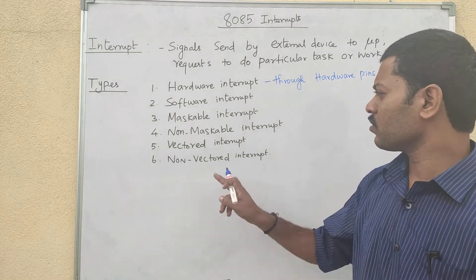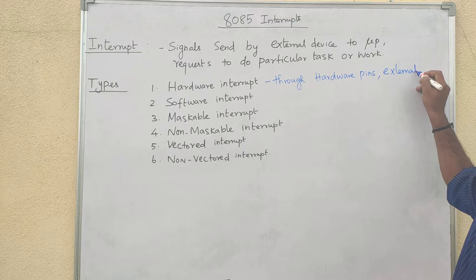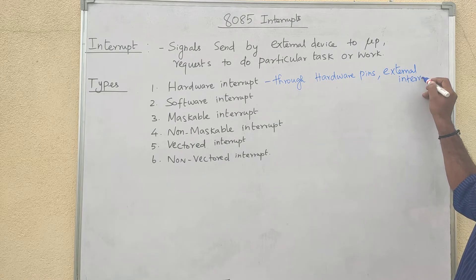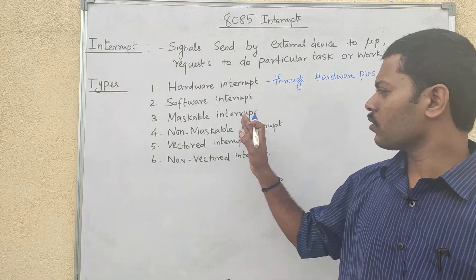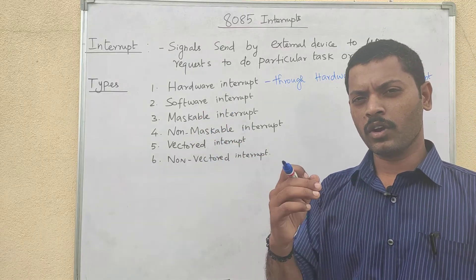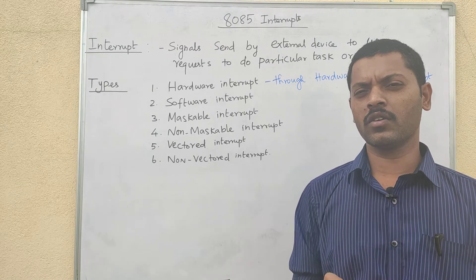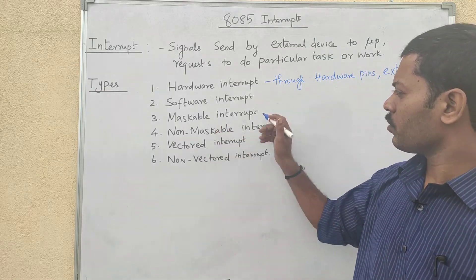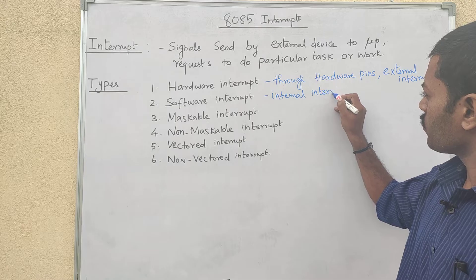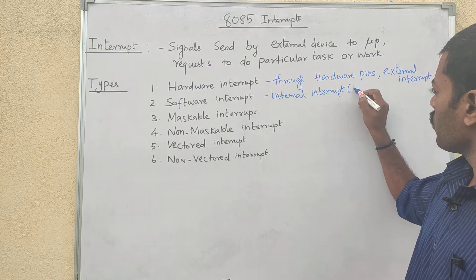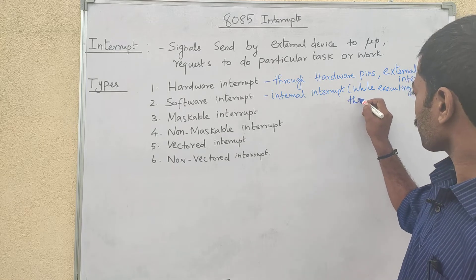Next is the software interrupt. Hardware interrupts are external interrupts — generated by a peripheral or I/O device, which is an external device. Software interrupts are generated from within the microprocessor program while executing an instruction. Those are internal interrupts, occurring while executing the instruction.